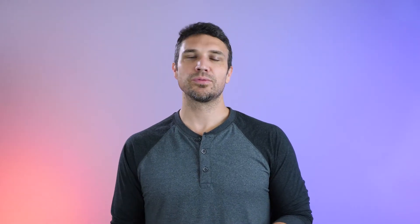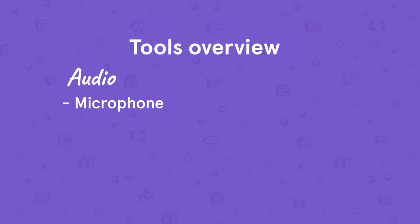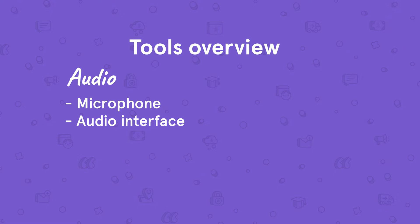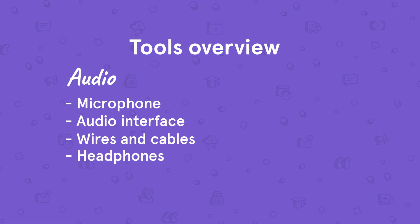For this video, we're going to assume you already have access to a computer that's powerful enough to run recording and editing software. To capture video and audio for your course, you'll need the following tools. For audio, you'll need a microphone, some kind of interface that allows your microphone to send audio to your computer, the appropriate wires and cables, a set of headphones, and possibly other adapters and accessories like pop filters, a microphone stand, or a boom arm.